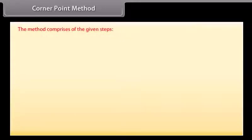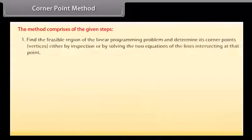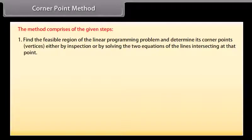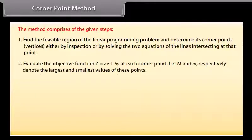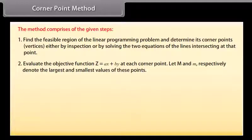Corner point method. The method comprises the following steps. Step 1: Find the feasible region of the linear programming problem and determine its corner points (vertices) either by inspection or by solving the two equations of the lines intersecting at that point. Step 2: Evaluate the objective function Z equals AX plus BY at each corner point. Let M and m respectively denote the largest and smallest values of these points.